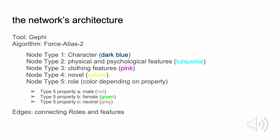Some more words on the network's architecture. There are five different types of nodes: for characters, for clothing features, for physical and psychological features, for roles, and for different novels. The edges link roles and features to characters and characters to novels. The algorithm is suitable for graphs with more than 100 nodes, which seems a good choice since our large graph contains around 300 nodes.